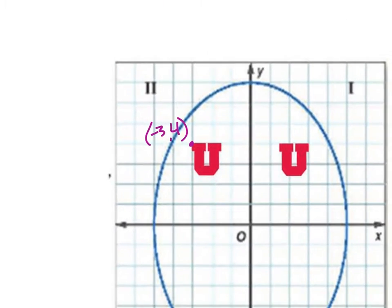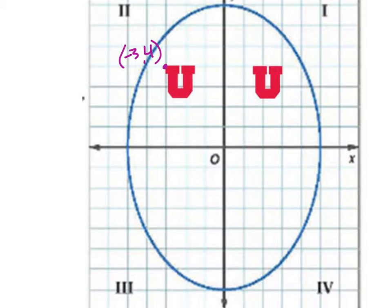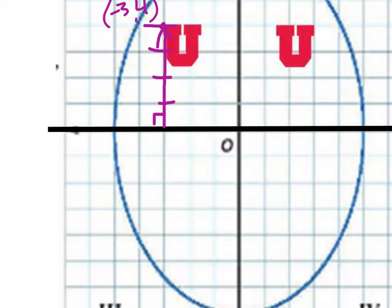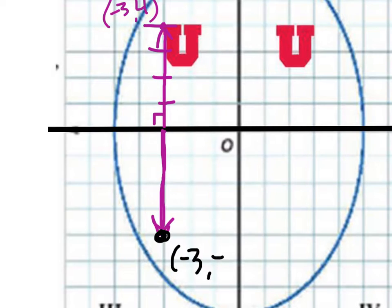Now let's reflect this — this will be our second image — and we're going to reflect this over the x axis. We're going to do the same thing: we're looking at this x axis, and we want to know how far away this point is from the x axis using this perpendicular line. This lies on this line where x is negative 3. It looks like it's 1, 2, 3, 4 units away from this x axis. So we're going to go 4 units in this other direction, giving us our new point, which is negative 3, negative 4.